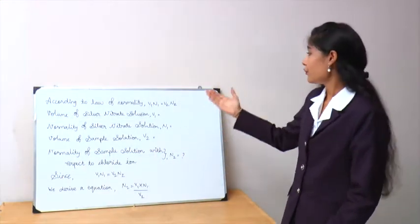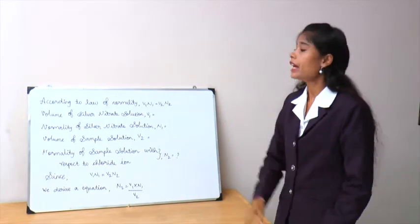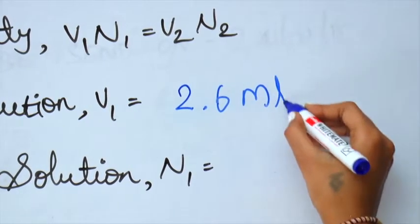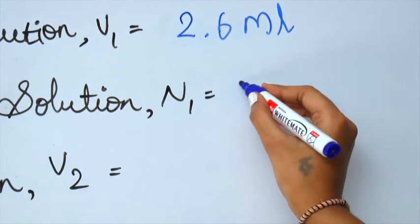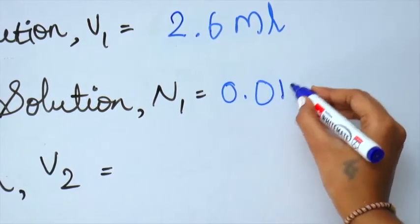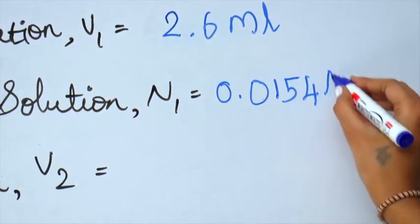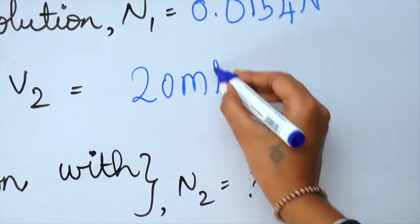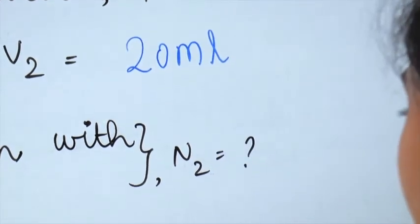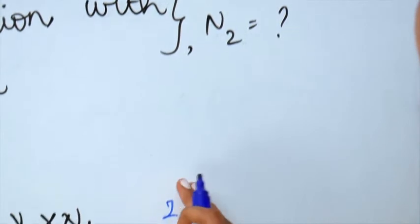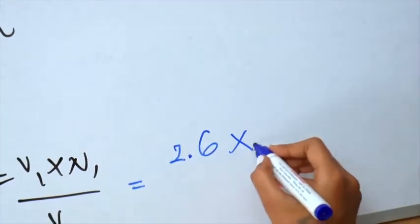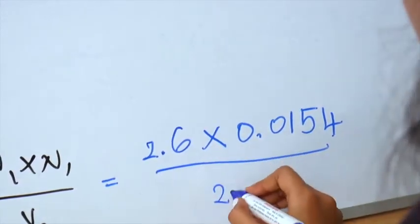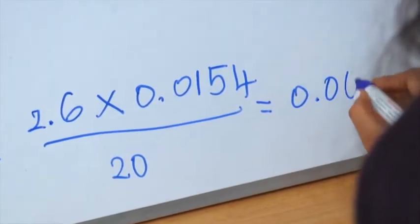According to the law of normality, V1N1 is equal to V2N2. The volume of the silver nitrate solution V1 is equal to 2.6 ml. The normality of the silver nitrate solution N1 is equal to 0.0154 N. The volume of the sample solution V2 is equal to 20 ml. Since V1N1 equals V2N2, we derive N2 equals V1 into N1 divided by V2, that is 2.6 into 0.0154 divided by 20.